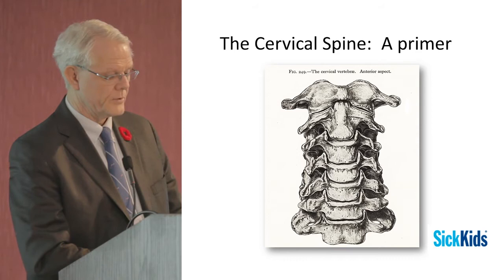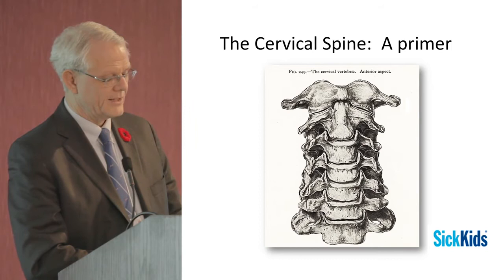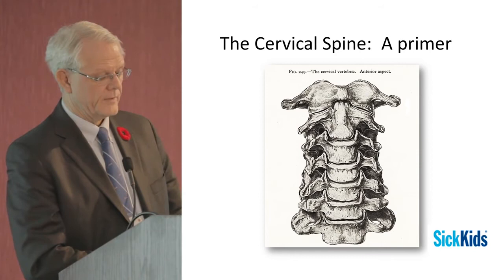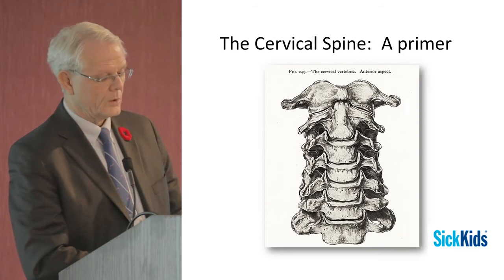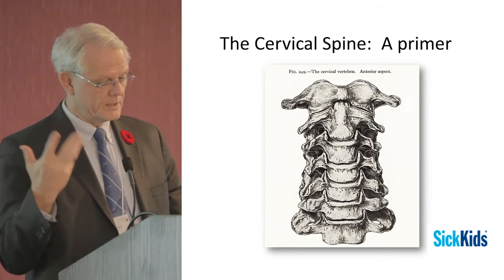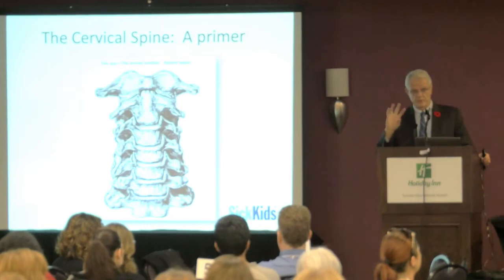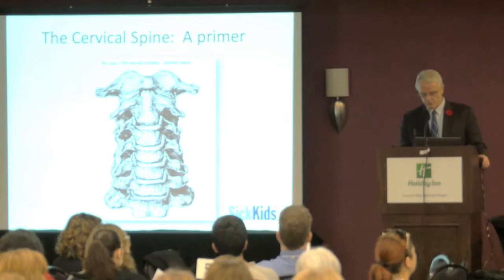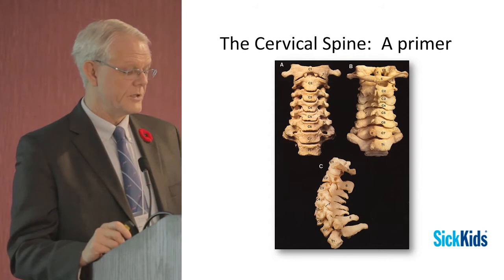You can see the odontoid process on C2. The other spinal bones are similar but vary in size, separated by discs. The transverse processes have an opening called the foramen transversarium, which allows for the vertebral artery — one of the main arteries supplying the brainstem and critical brain structures. With hyperextension or severe rotation of the neck, that artery can be challenged, potentially leading to stroke, including in EDS patients.